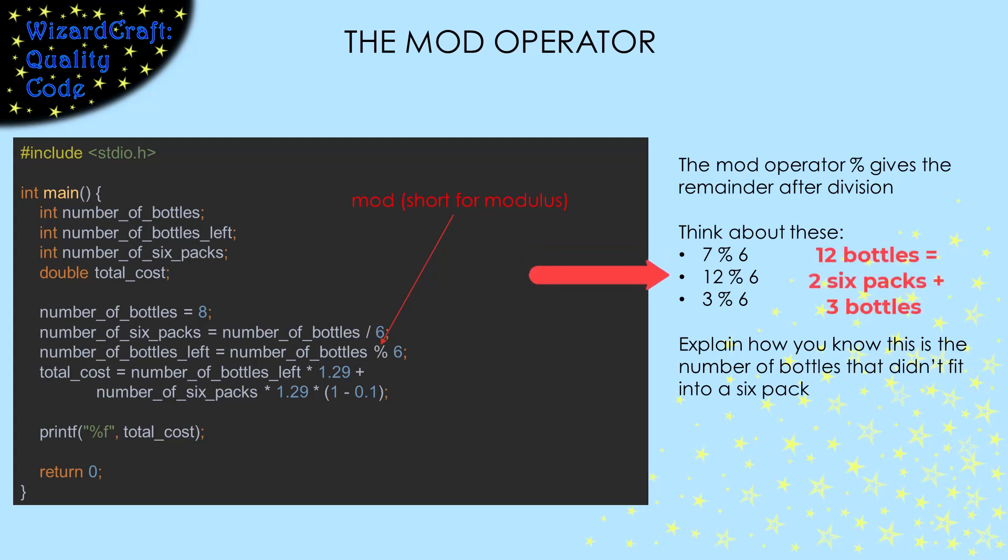If we were buying twelve bottles, two six-packs would be perfect. No single bottles would be required. Twelve mod six is zero because six goes evenly into twelve. So that works.